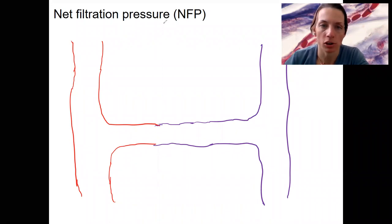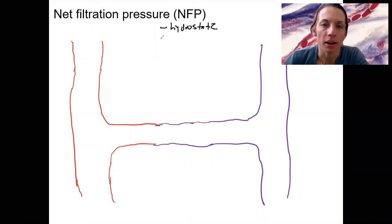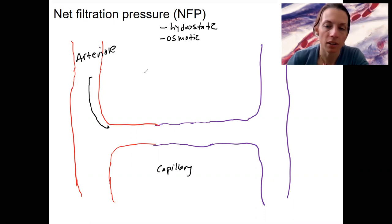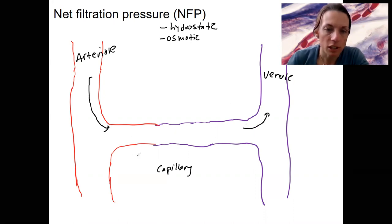We care about net filtration pressure — the net pressure that is based on hydrostatic pressure and osmotic pressure, both in and outside of the capillary. Here's our capillary, a simplified section. It receives blood from our arteriole. Blood is coming in, and blood is going to leave going out the venule. So let's look at the pressures that exist in the different portions here.